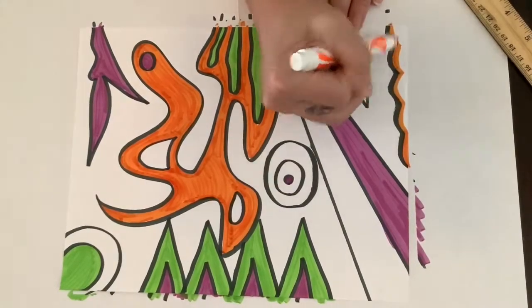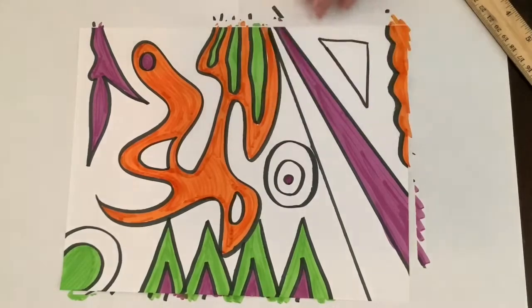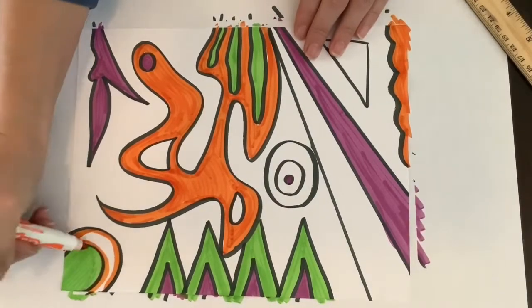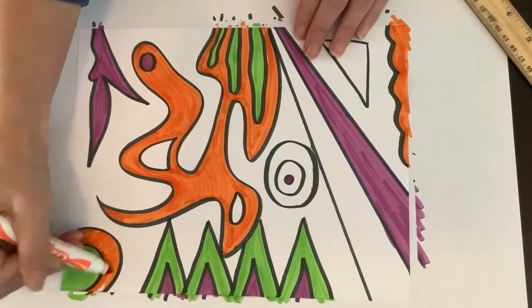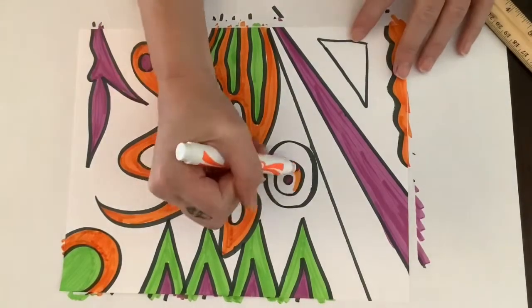Then you can take either a regular black marker or a sharpie marker and outline your design or trace over your design, then get rid of any pencil lines that are still showing.